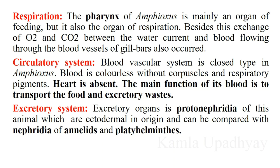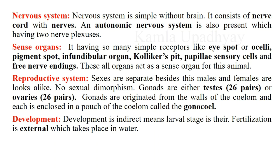The excretory organs are protonephridia, which are ectodermal in origin and can be compared with the nephridia of annelids and platyhelminthes. The nervous system is very simple and without a brain; it consists of a nerve cord and nerves. The autonomic nervous system is also present but only with two nerve plexuses, and it controls the unstriated muscles of the gut.